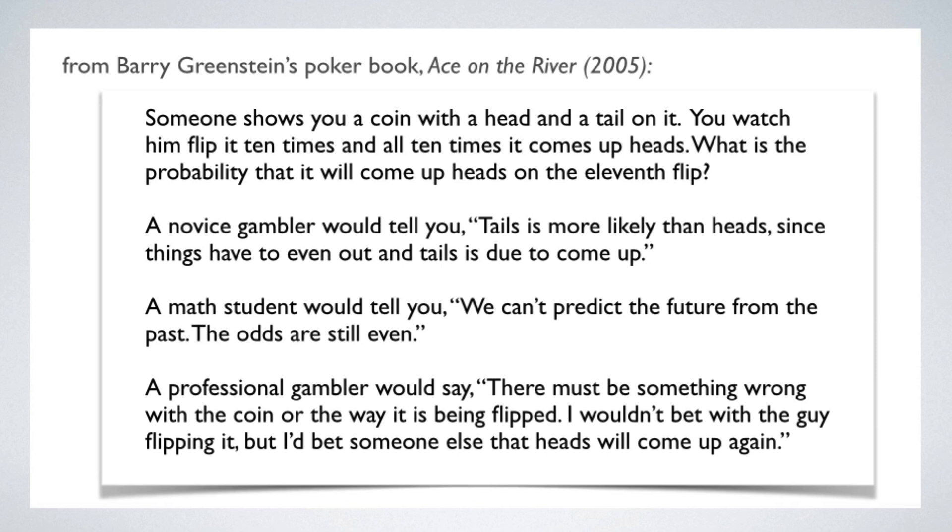This suspicious judgment reflects the background experience of a professional gambler, who takes 10 heads in a row as evidence that the coin is being manipulated. The point, again, is that the only judgment that is obviously irrational is the first one, the one that commits the gambler's fallacy. The other two are live options, and only the context and your background knowledge of the situation can tell you which of these you should prefer.